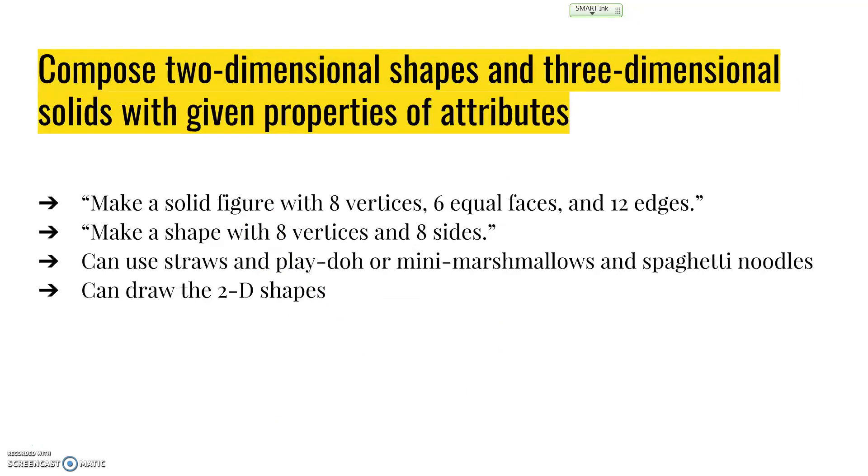They'll also compose two-dimensional shapes and three-dimensional shapes with given properties or attributes. We might ask them to make a solid figure with eight vertices, six equal faces, and twelve edges, or make a shape with eight vertices and eight sides. They could use straws and Play-Doh balls, straws and mini marshmallows, or toothpicks with marshmallows to build 3D shapes. They can draw 2D shapes with pencils, crayons, pens, or with their finger in salt, rice, or shaving cream on a cookie sheet.